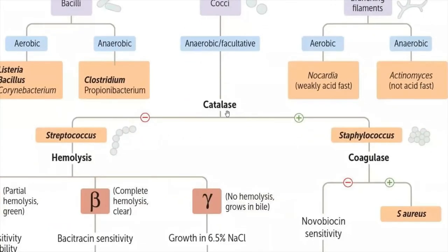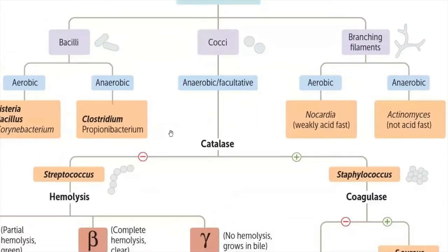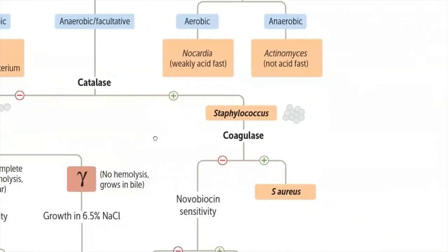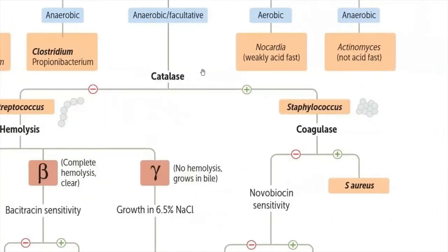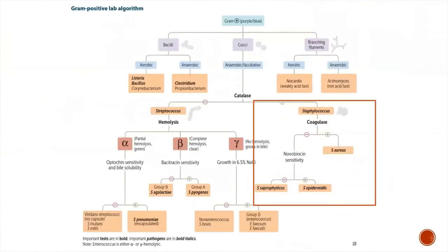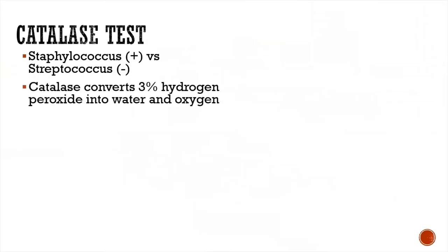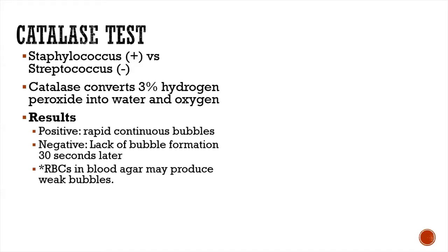The catalase test will differentiate between Staphylococcus and Streptococcus, which are the most common gram-positive cocci. A positive catalase test indicates Staphylococcus; a negative result indicates Streptococcus. The principle is that catalase converts hydrogen peroxide into water and oxygen, which is why the positive result is the appearance of rapid continuous bubbles due to oxygen production.